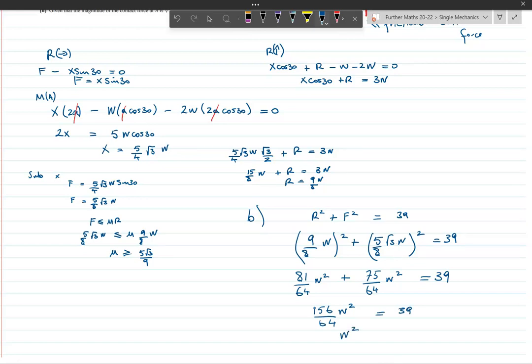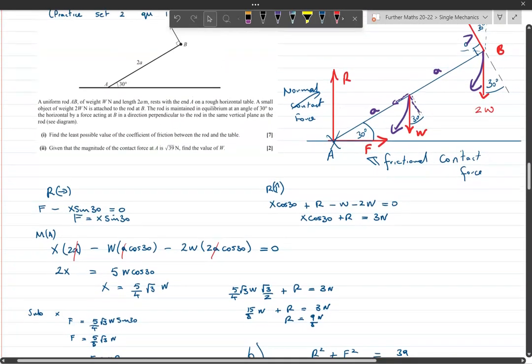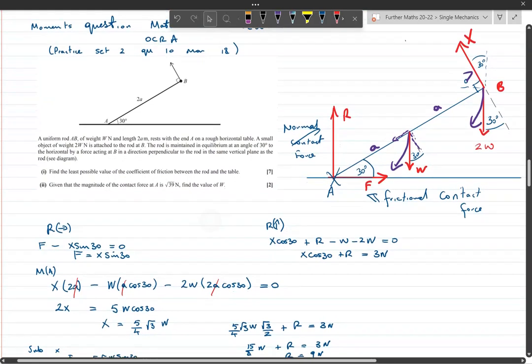That gives us W squared is equal to 16, so W equals 4.